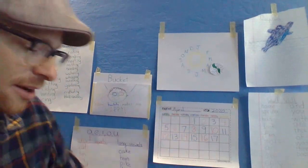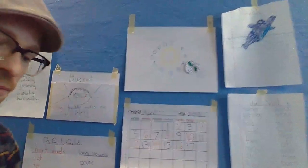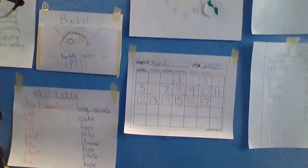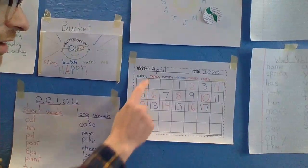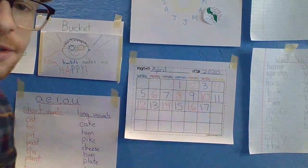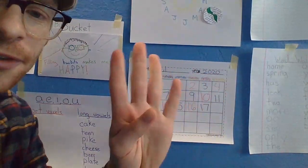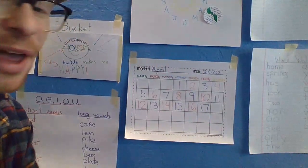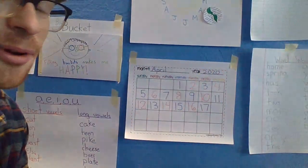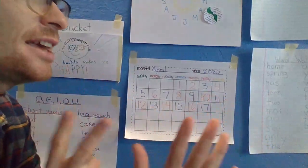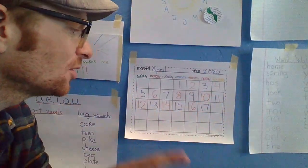We're going to come down here to our days of the week. So we have April 2020. These are our days of the week. So throw up four fingers. No, throw up eight fingers. No, throw up seven fingers. There are seven days in the week, you know.